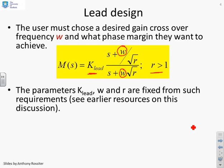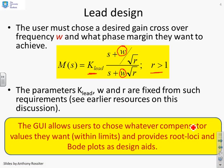The parameters k lead, omega, and r are fixed from the requirements that we're giving here. So the requirements, we're fixing the gain crossover frequency and we're fixing the phase margin. The GUI allows users to choose whatever compensator values they want within limits.